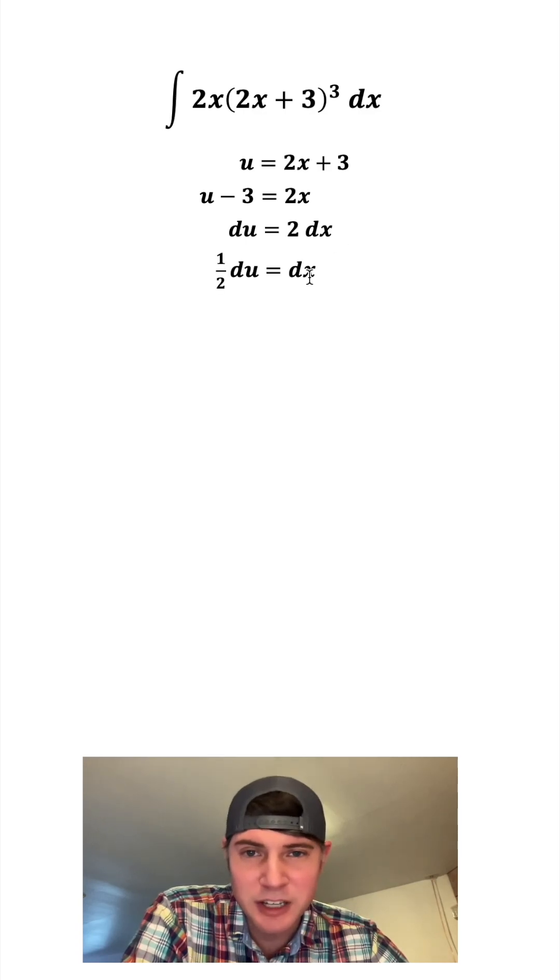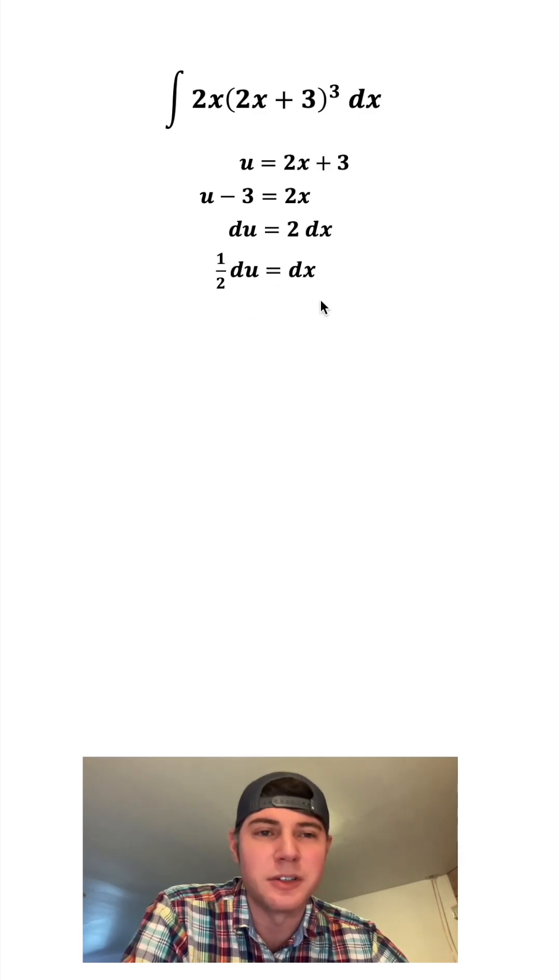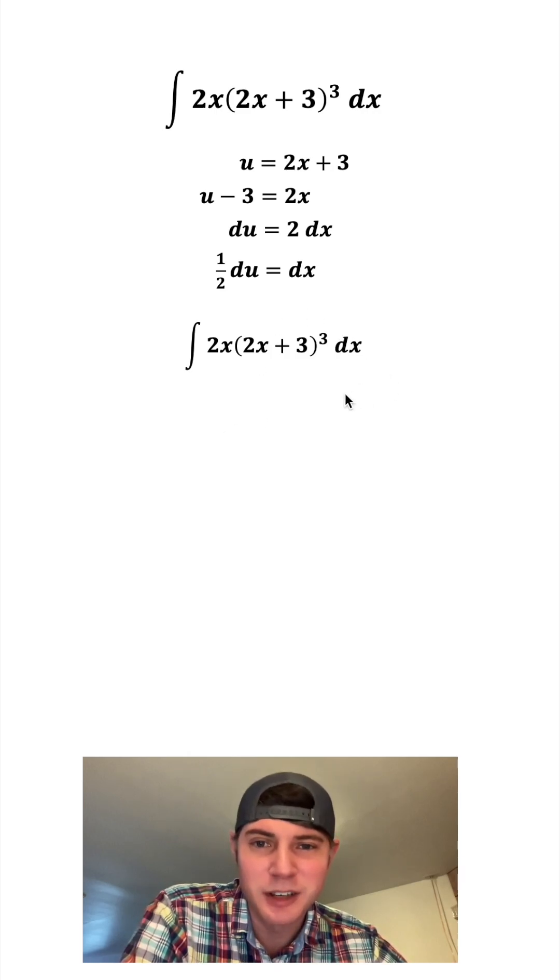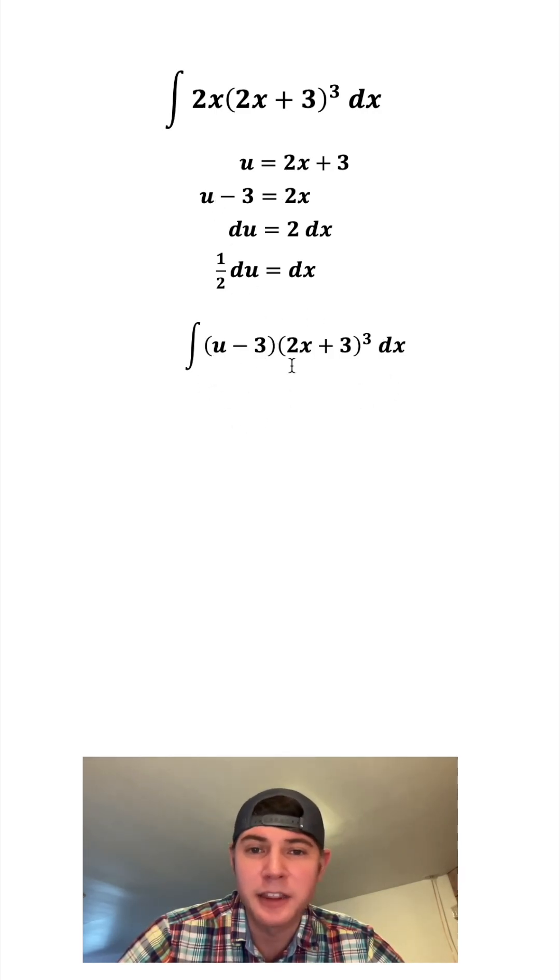And to make things even easier, let's divide both sides by 2, so we have 1 half du is equal to dx. Let's copy down this integral and do our u-substitutions. This 2x we're going to change into u minus 3, and this 2x plus 3 we're going to change into a u, and the dx we're going to change into 1 half du.